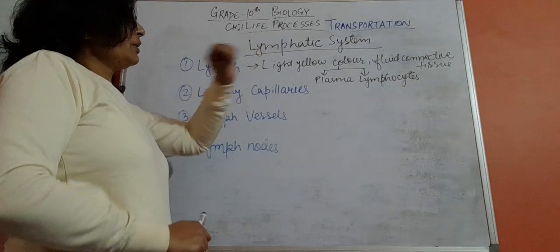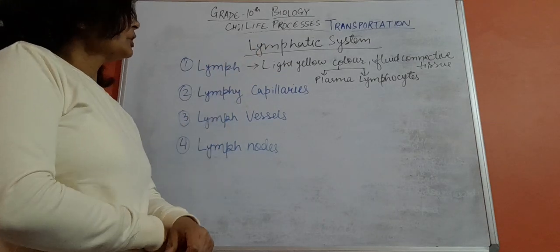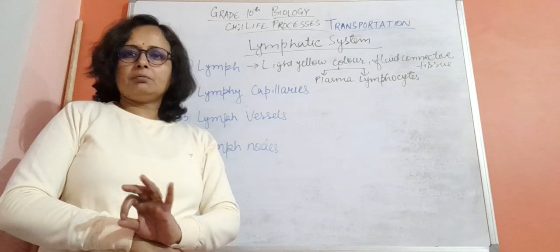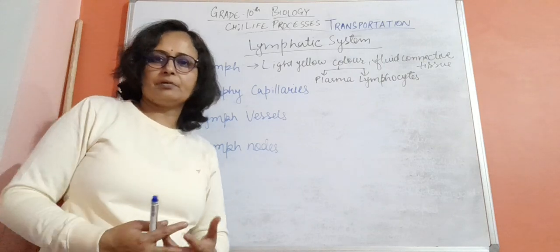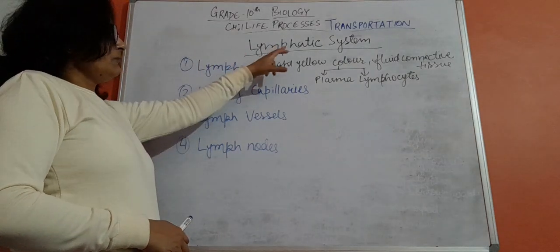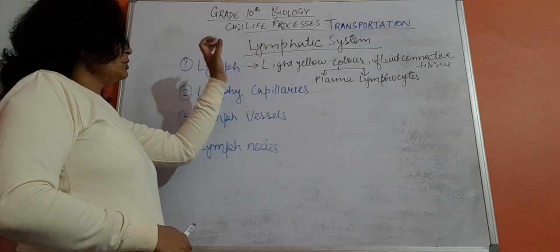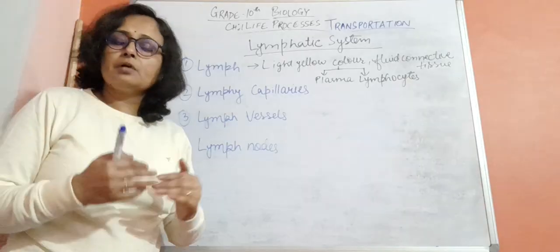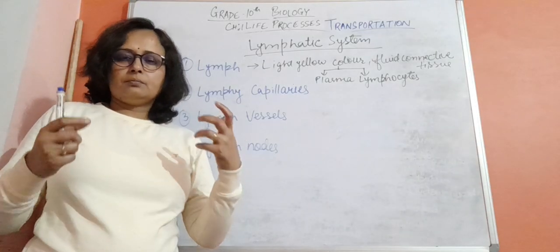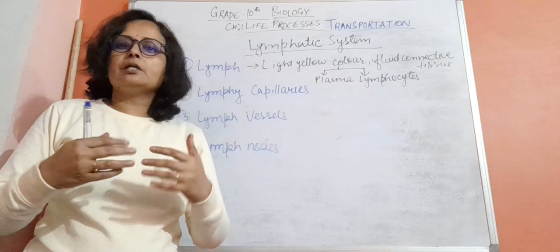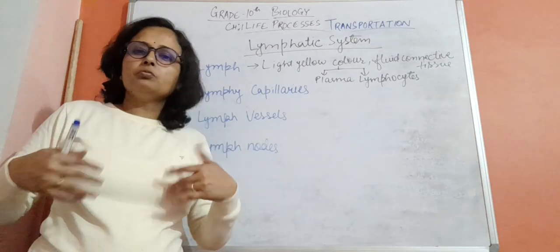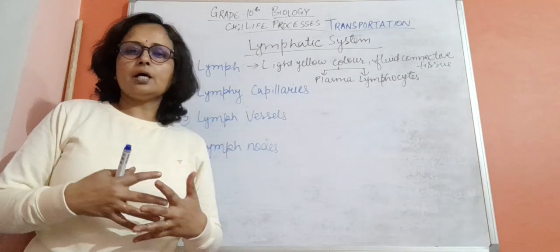Now next is the lymphatic system. What is the role of the lymphatic system in blood transportation? The lymphatic system is one more system which circulates things in the body, from all over the body to the heart.